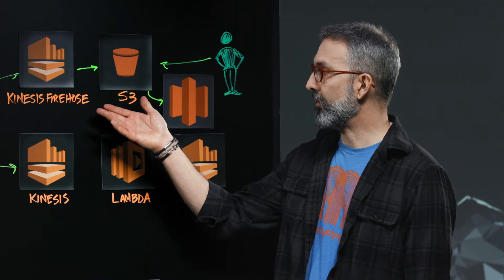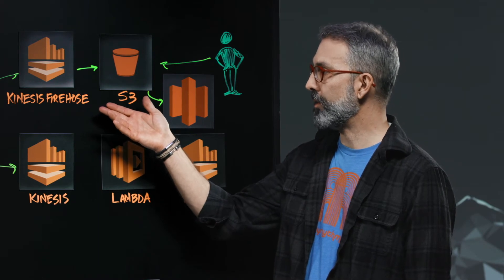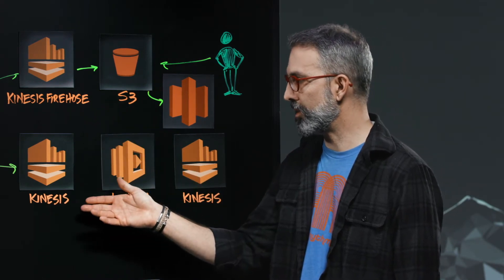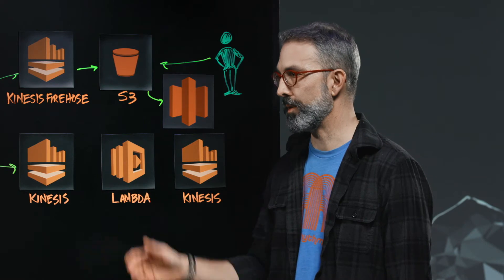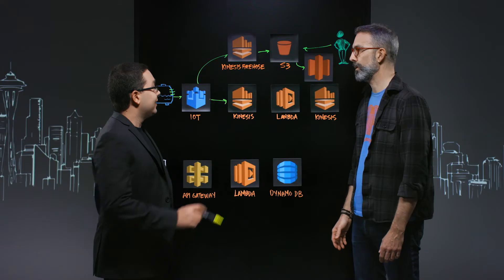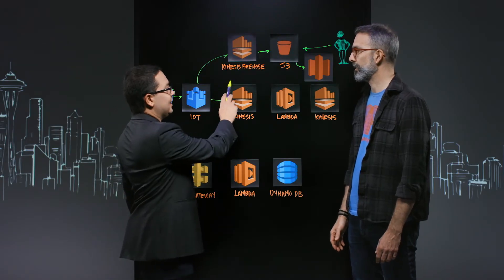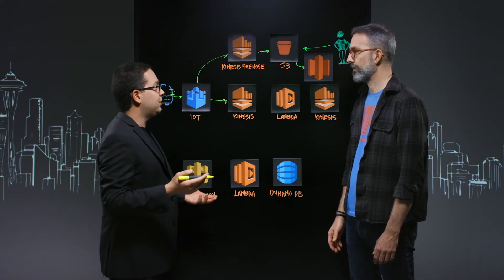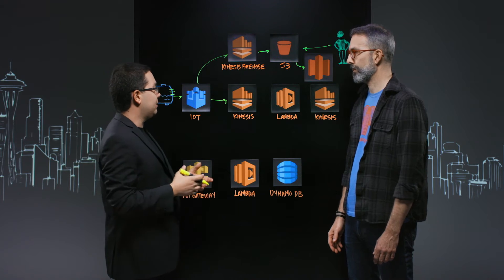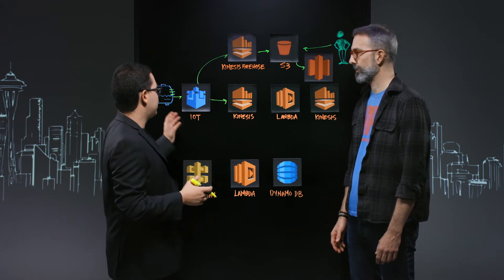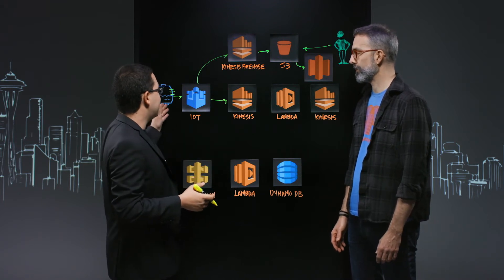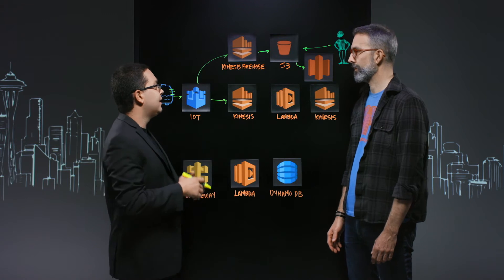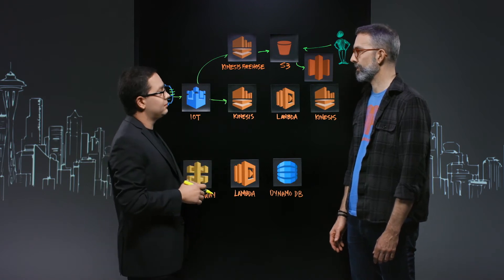We chose Firehose here rather than Kinesis because Firehose lets us get data into S3 with no compute utilization on our part. Messages flow all the way from the tank through the system into S3, and we never spend a single cent on compute.